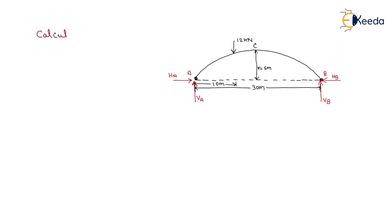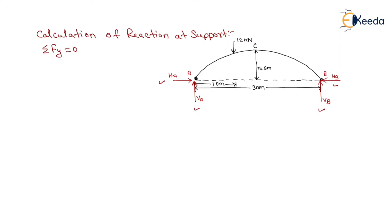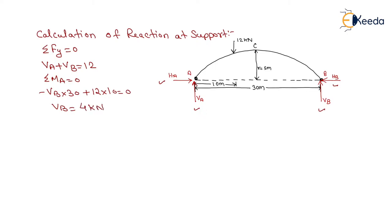For the calculation of reactions at supports we use equilibrium conditions. At both supports the reactions are VA and HA in the vertical and horizontal directions, and similarly VB and HB. Using the first equilibrium condition, summation of vertical forces equals zero: VA plus VB equals 12. Using the second equilibrium condition, moment about A equals zero: minus VB into 30 plus 12 into 10 equals zero, giving VB equals 4 kilonewtons.